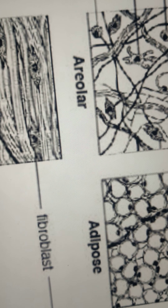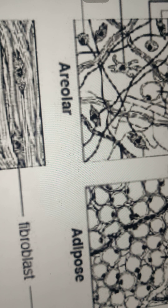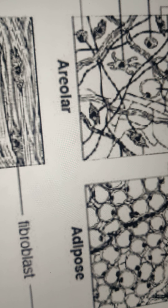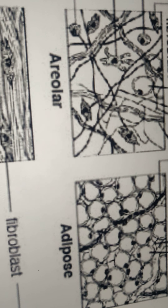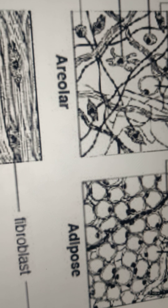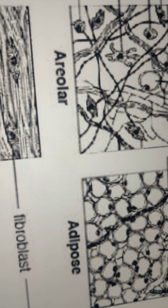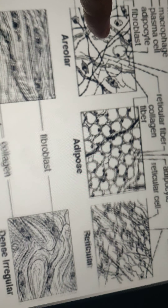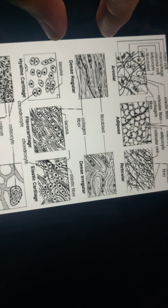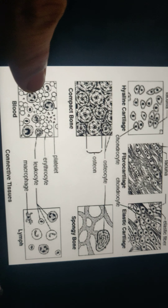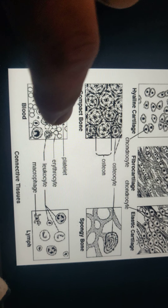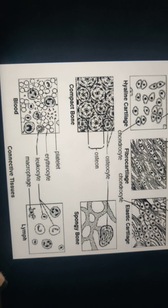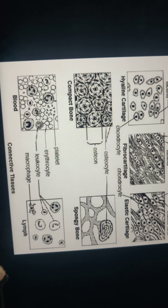The major functions of connective tissue are binding, providing support, protection, transport, and insulation. Blood is also a type of connective tissue. Apart from blood, connective tissue is found in all organs, supporting the specialized tissues.